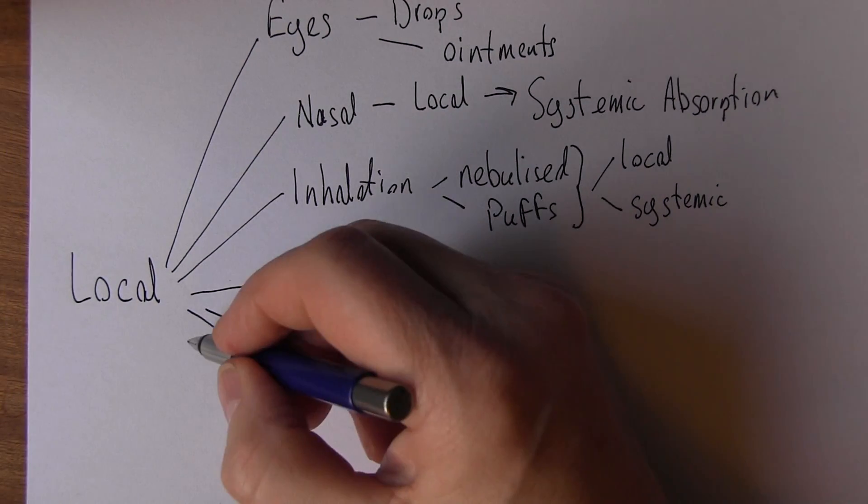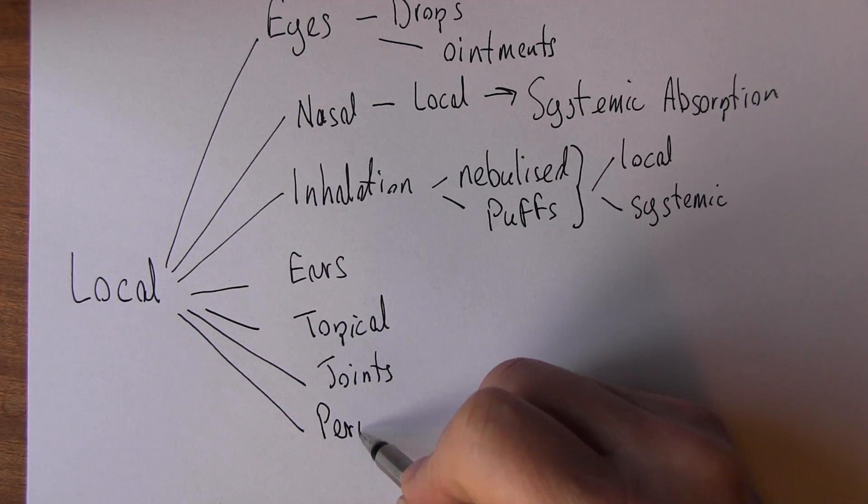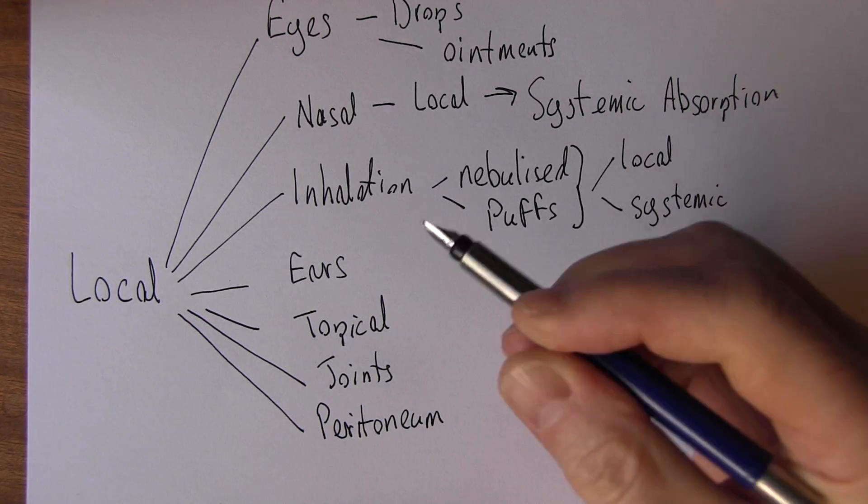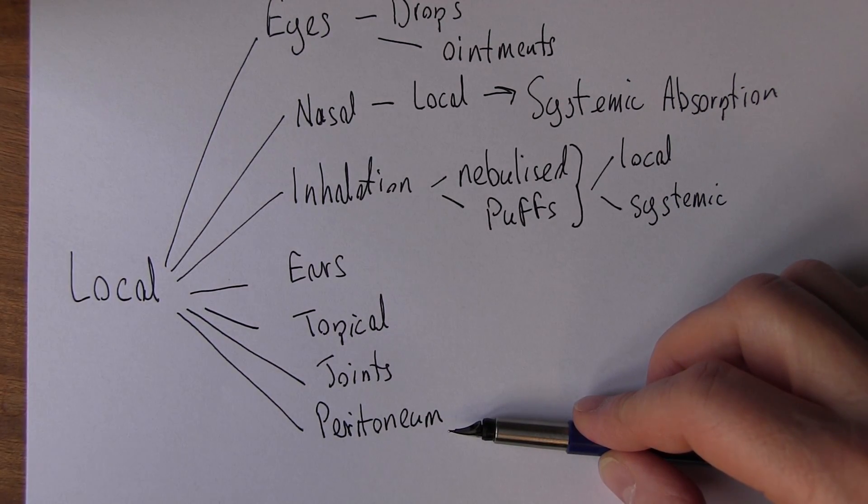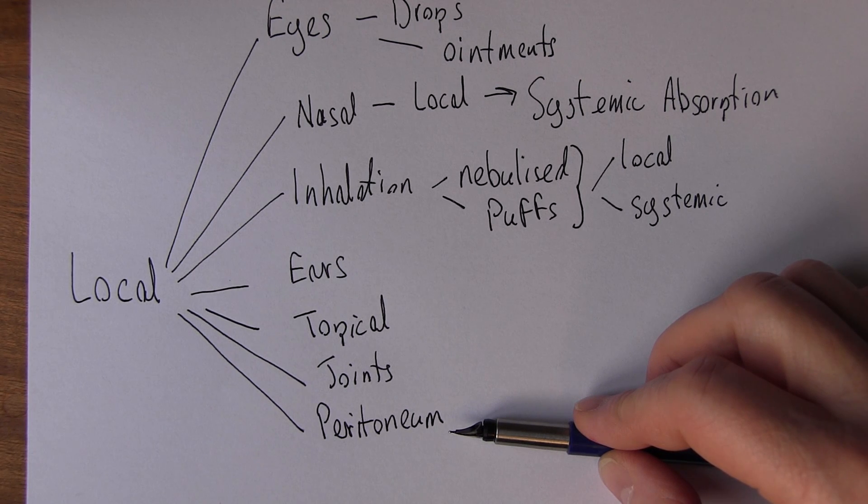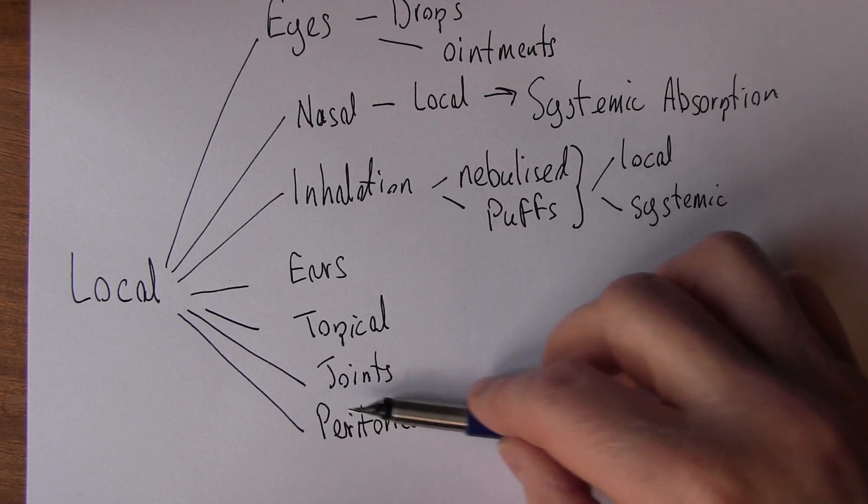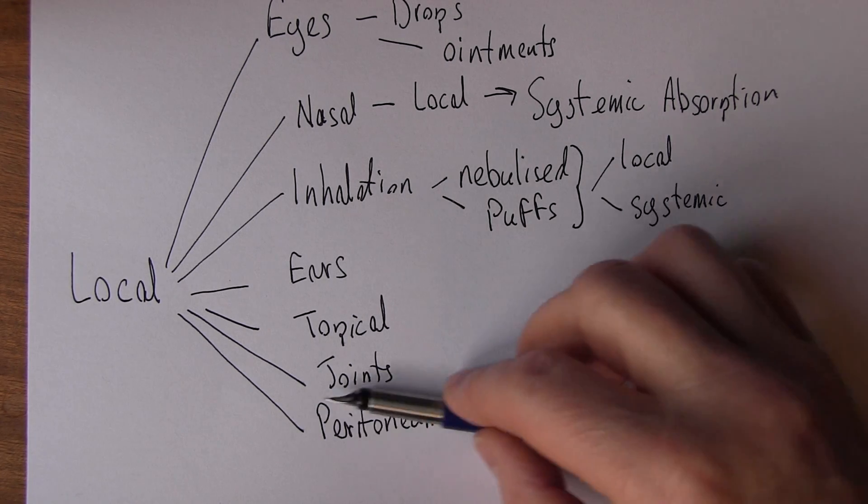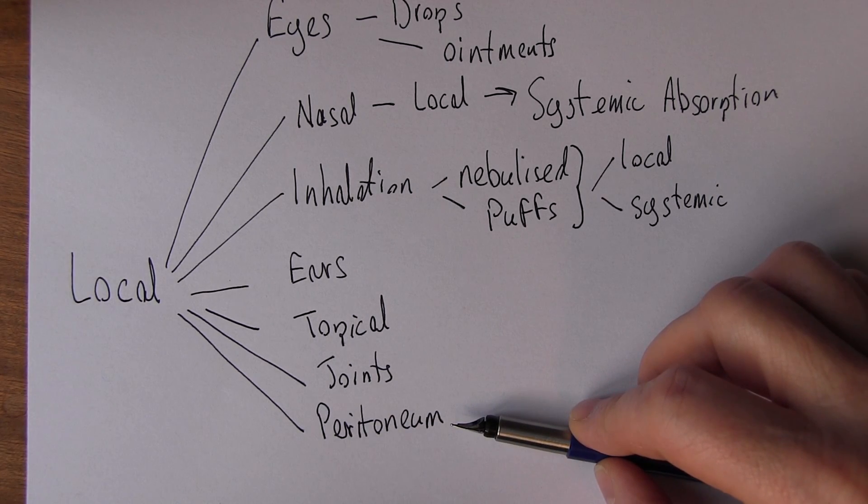We can give drugs directly into the peritoneum, the peritoneal cavity. This is the potential space between the visceral and parietal peritoneal membrane in the abdomen. We might take advantage of this potential space, turning it into an actual space, for example if we were doing peritoneal dialysis. Sometimes we could add drugs to the dialysate. This can have a local effect, such as antibiotics. But of course, the peritoneum contains lots and lots of small blood vessels and capillaries, so the potential for systemic absorption is significant.